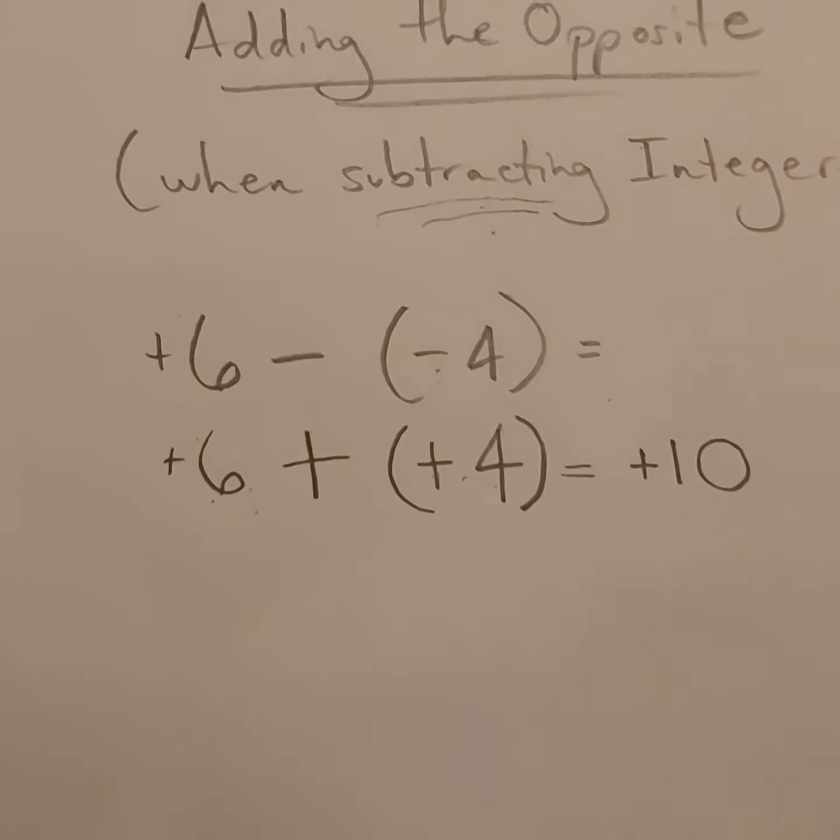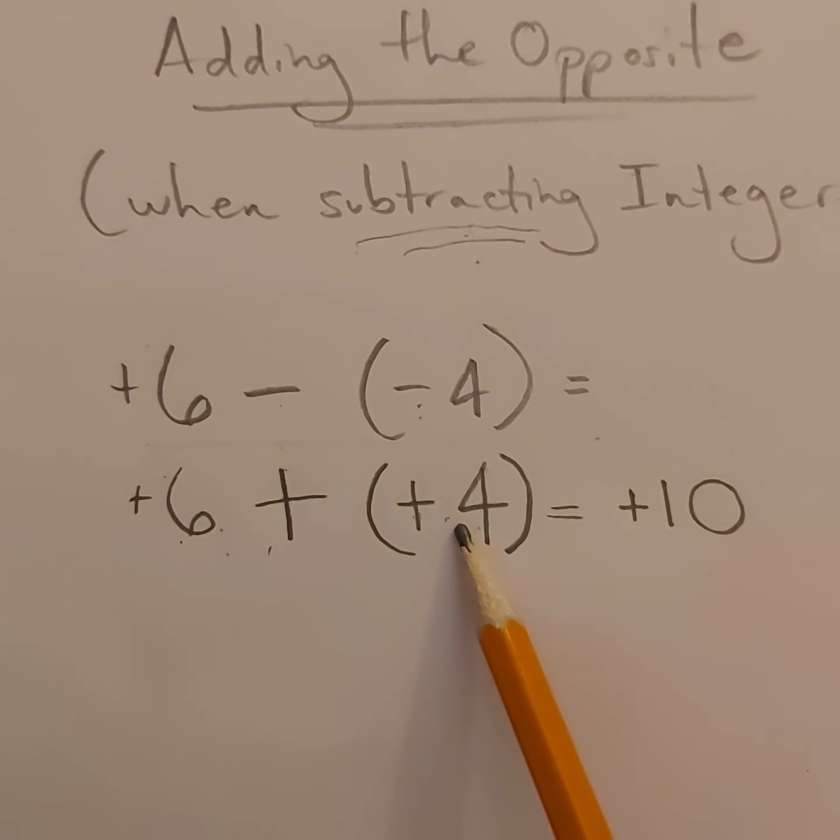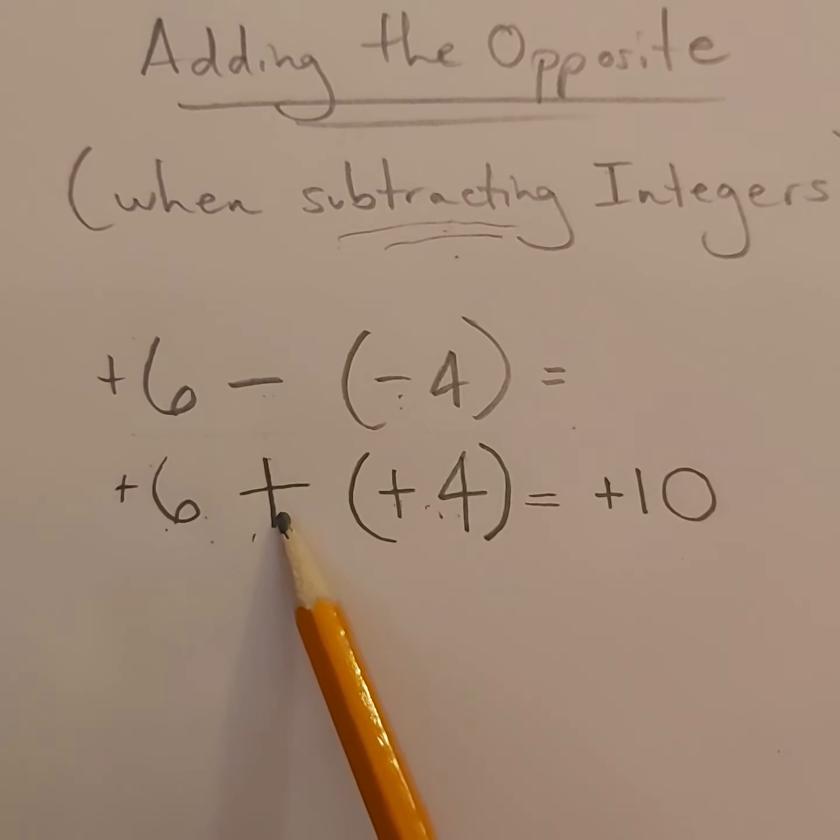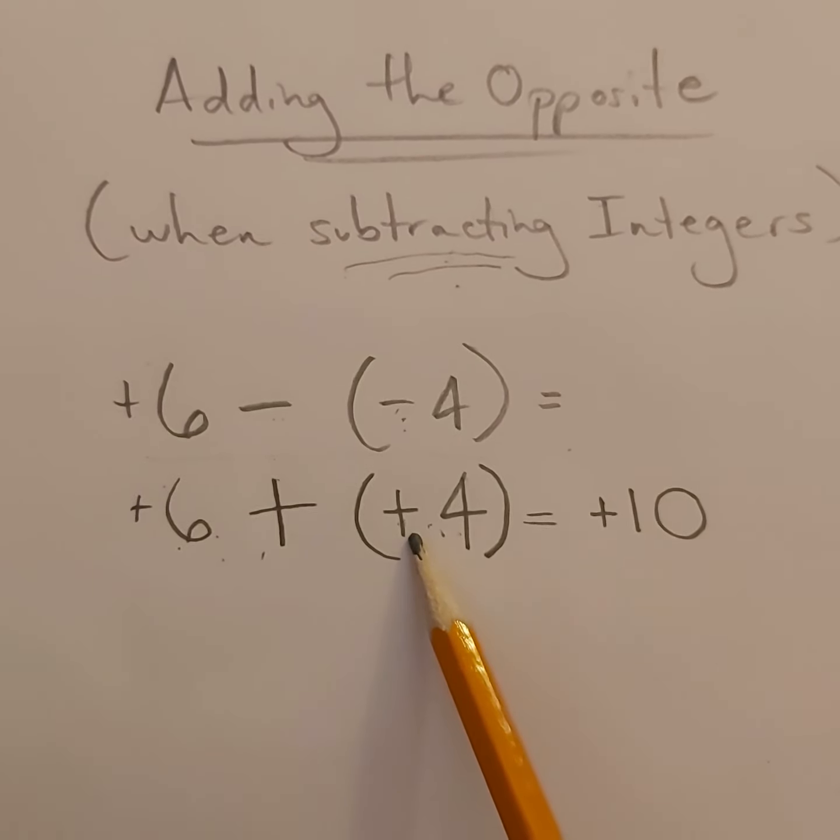So that's basically it. You're just going to add the opposite integer. So you change your subtraction to an addition, and you change the sign of the second number into the opposite.